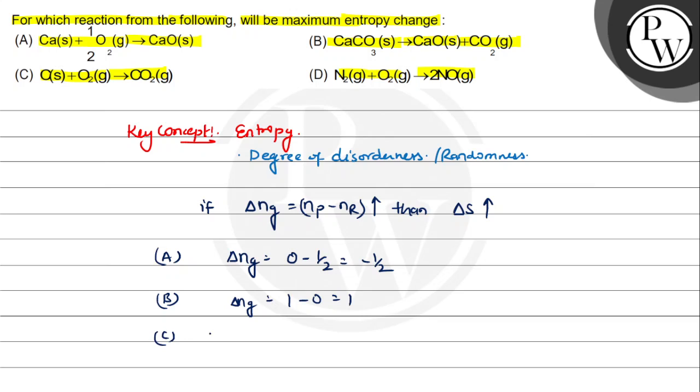If we check option C, ΔNg will be: CO2 is 1 and oxygen is 1, which equals 0.